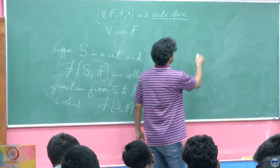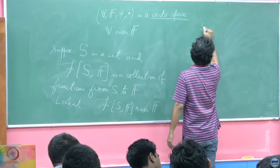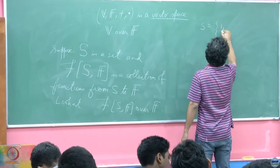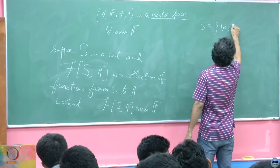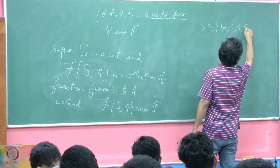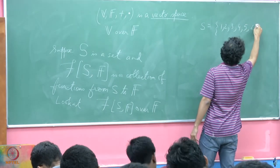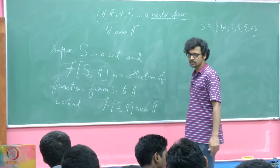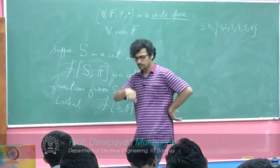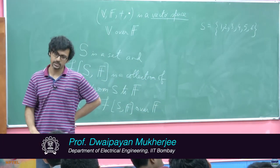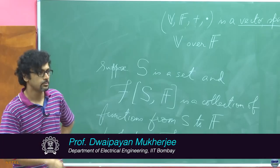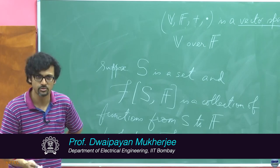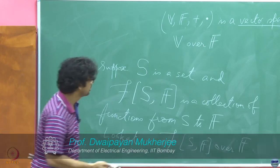Suppose S is just given by 1, 2, 3, 4, 5, 6. So it is just the set of the first 6 positive integers, the first 6 natural numbers.